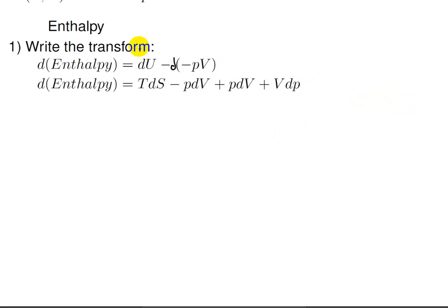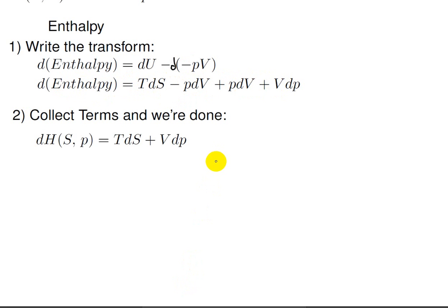Now we'll do enthalpy. This one's a little bit tricky because the derivative of enthalpy uses the old function du minus the derivative of the conjugate pair, but here the conjugate pair was minus pv — so minus a minus effectively gives us a plus. Plugging in for dH: tds minus pdv (that's the u part), plus pdv plus vdp. Collecting terms, minus pdv and plus pdv disappear, leaving dH as a function of s and p, equal to TdS plus vdp.